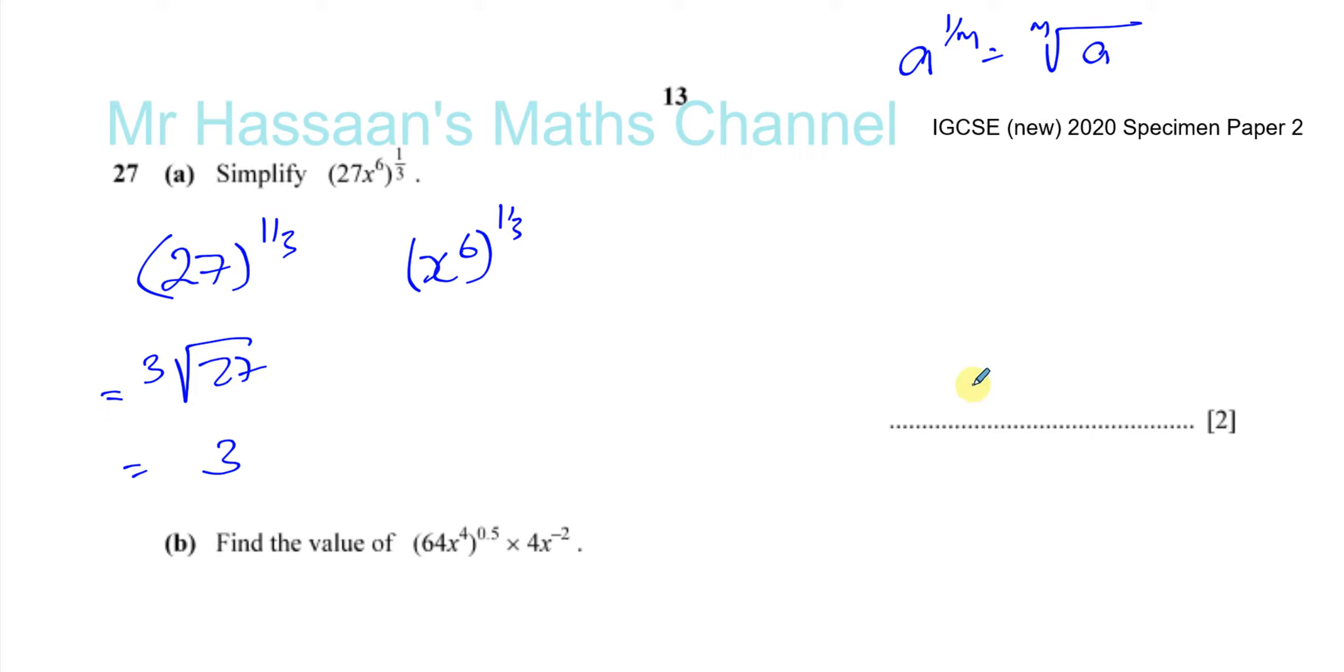So I've got a 3 for the main number. When you deal with letters and indices, I like to think of this as a to the power of m raised to another power of n is equal to a to the power of the product of the two powers. So this will be x to the power of 6 times one third, and 6 times one third is 2, so it's x squared. So the answer is 3x squared.